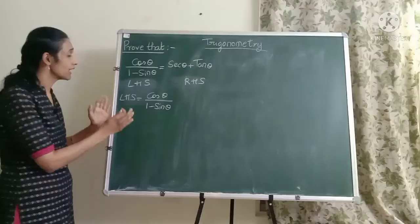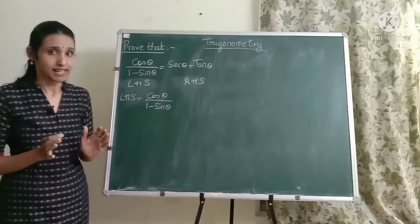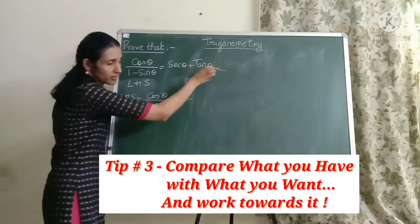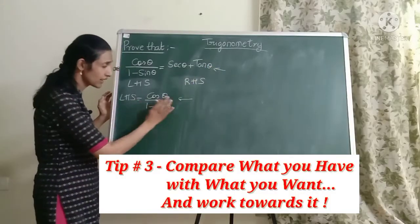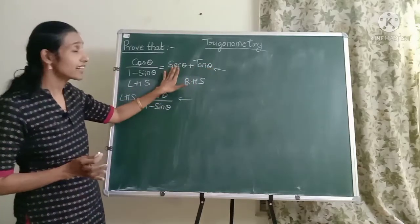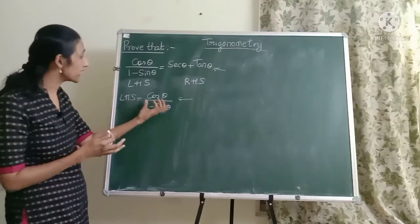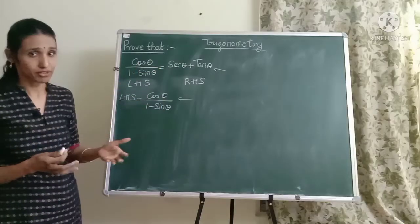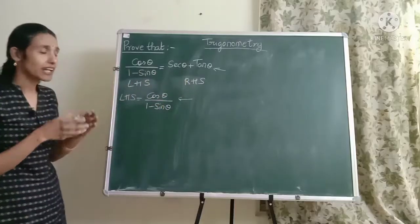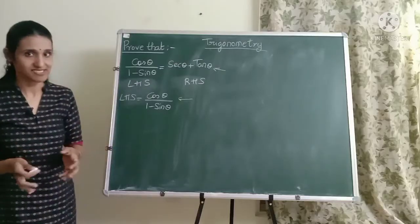So friends we have chosen the side that we are going to start with. Now comes the third tip. Now the third tip is that you need to study what you have and what you want. Now what we have is cos theta divided by 1 minus sin theta. And what we want at the end is sec theta plus tan theta. So as you can see there is apparently no connection between these two. They look so different. So always keep in mind what you want and with that in mind you should do the steps. Otherwise it's very easy to get lost in these type of questions.